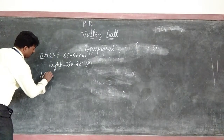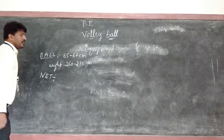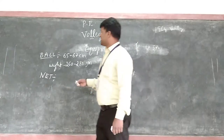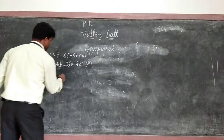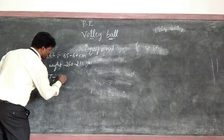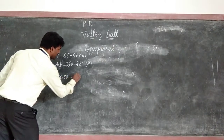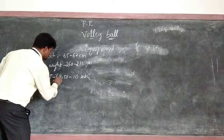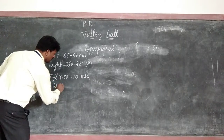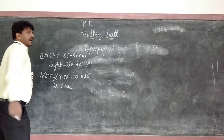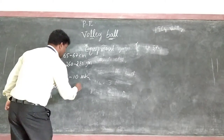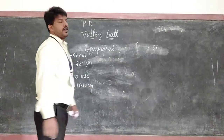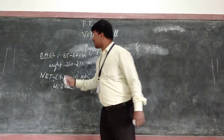Next, the net. The length of the volleyball net is 9.5 to 10 meters. The width is 1 meter. The mesh squares measure 10 by 10 centimeters. That's all about the volleyball net.